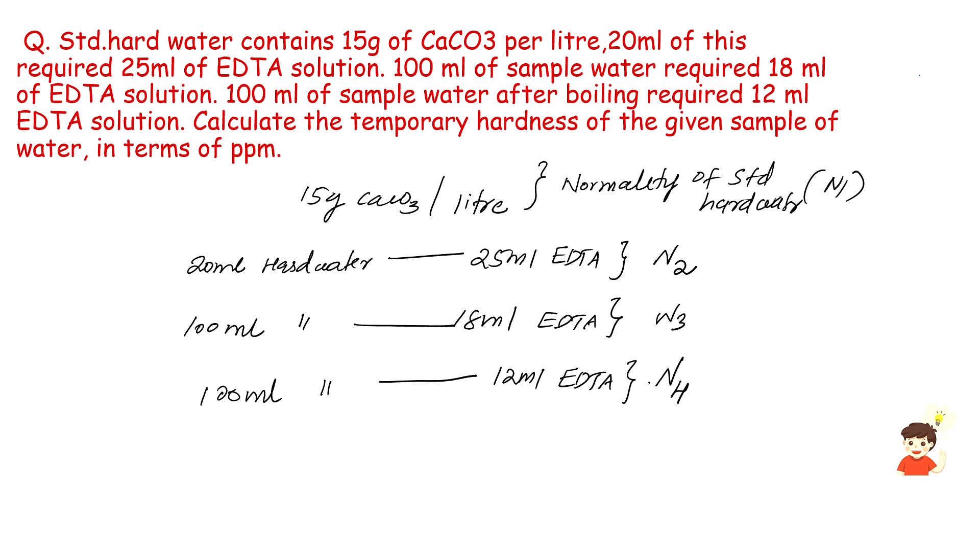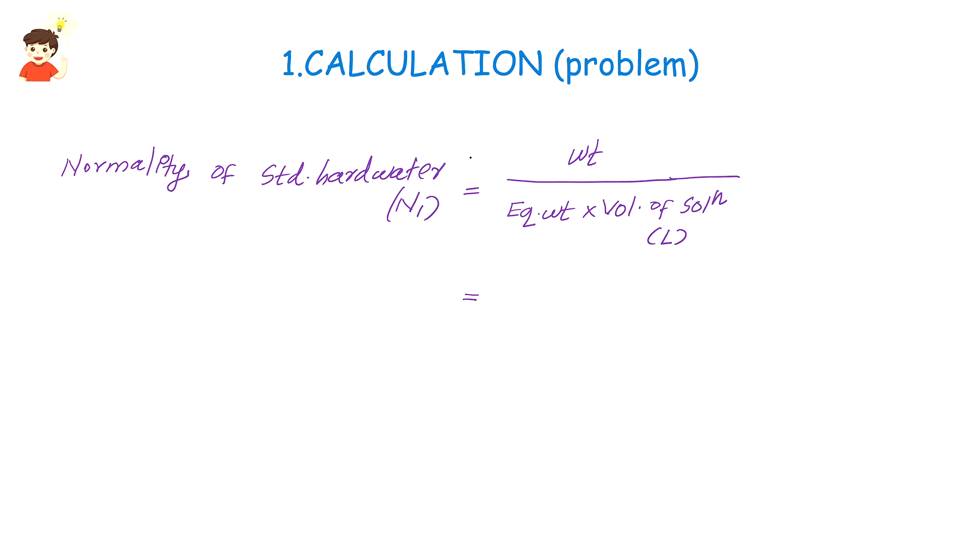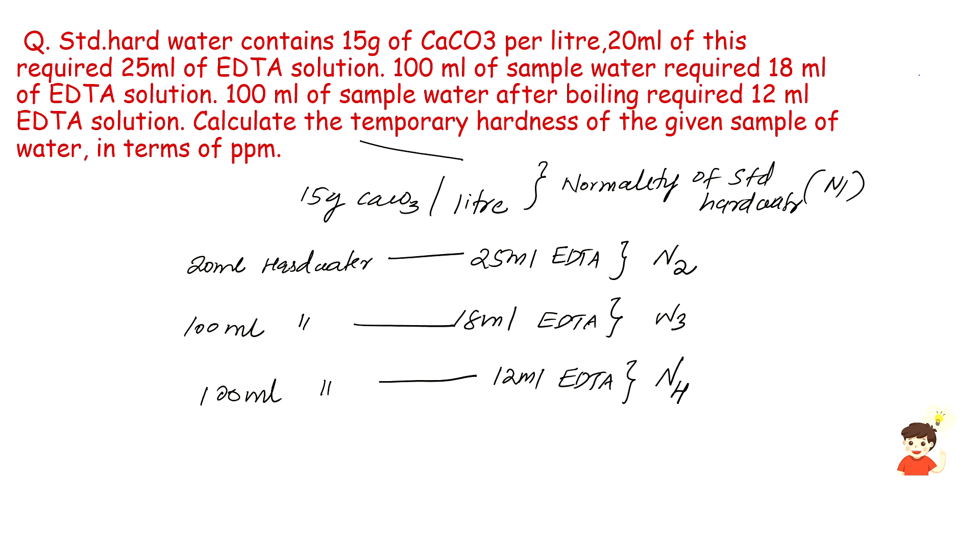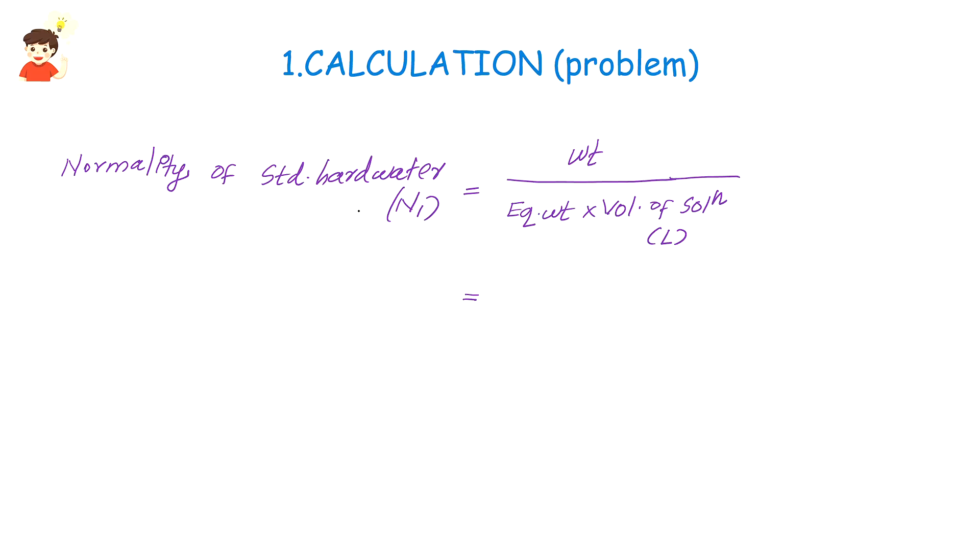In the first stage, calculation of normality of standard hard water: N1 equal to weight divided by equivalent weight times volume of solution in liters. So you can use 15 divided by 50 times 1 liter. The value is 0.3 normal.